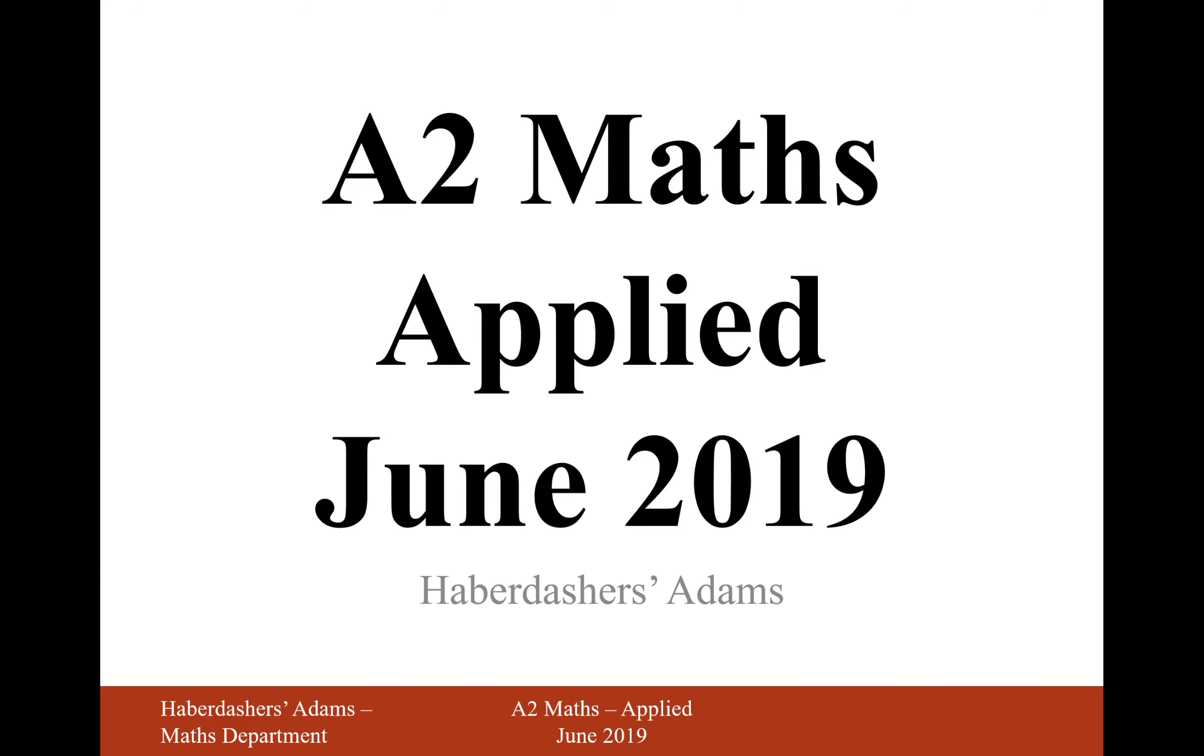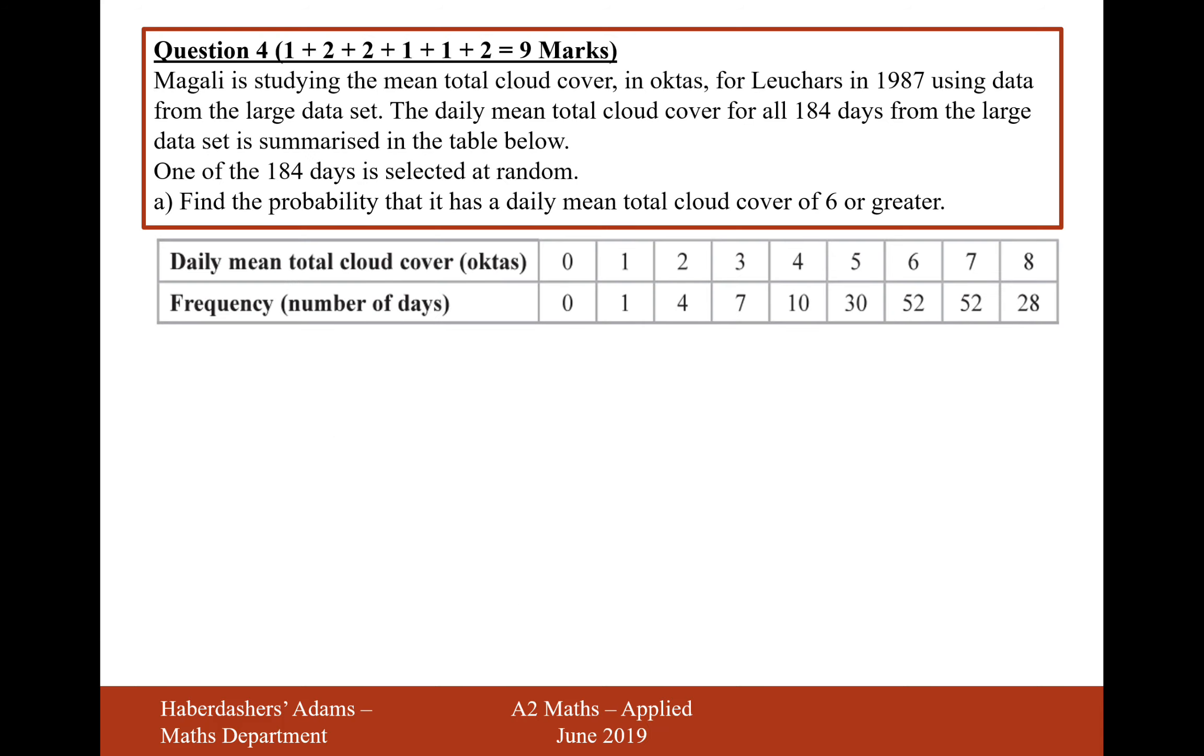Hello there, welcome to the June 2019 applied paper. Here we're looking at question 4. Magali is studying the mean total cloud cover in octars for Lecharz in 1987 using data from the large data set. The daily mean total cloud cover for all 184 days from the large data set is summarised in the table below. So one of the 184 days is selected at random. Find the probability that it has a daily mean cloud cover of 6 or greater. So it's 6 or greater out of the total.